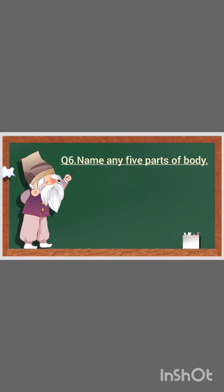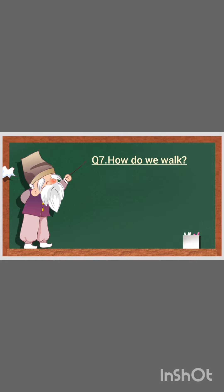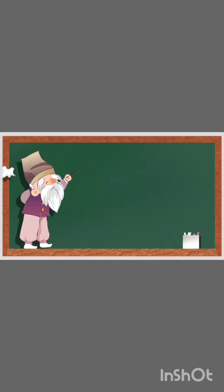Name any 5 parts of the body. Answer: Head, forehead, eyes, nose, ears. How do we walk? With legs. How do we clap? With hands.